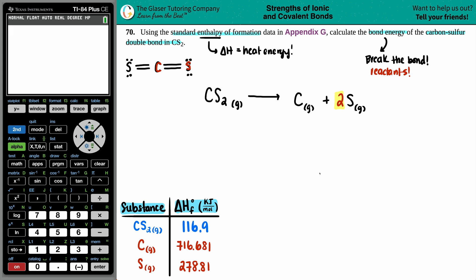So this is where we're now going to go back into the appendix to get those delta H values. So for a CS2 gas, delta H is 116.9. And then we have -716.681. And then we got 278.81.